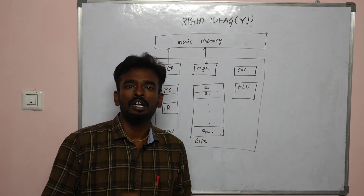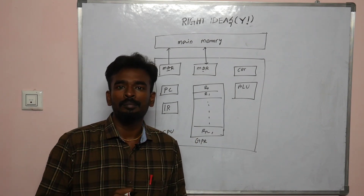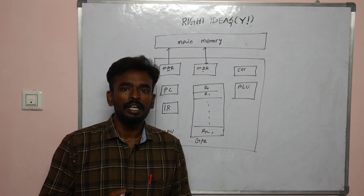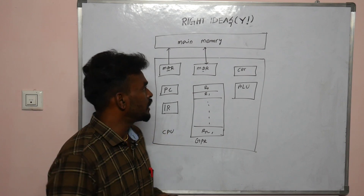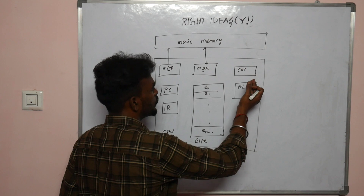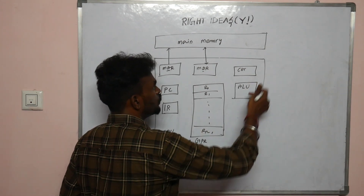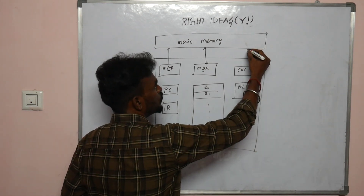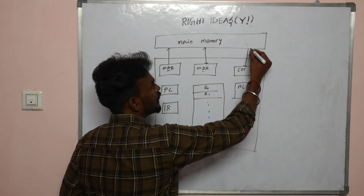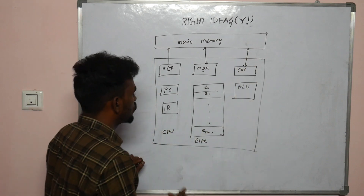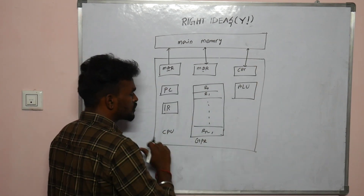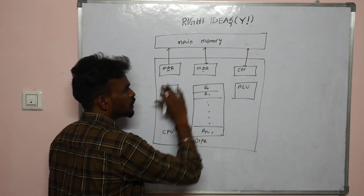To define MAR and MDR: MAR is the Memory Address Register and MDR is the Memory Data Register. The Control Unit regulates all the processes throughout the processor. The whole process involves the main memory and the CPU — the Central Processing Unit.